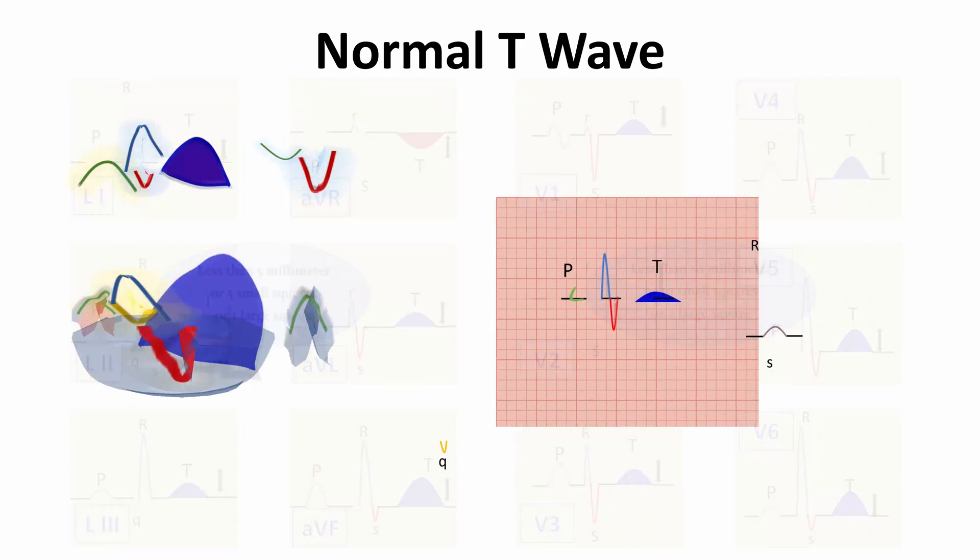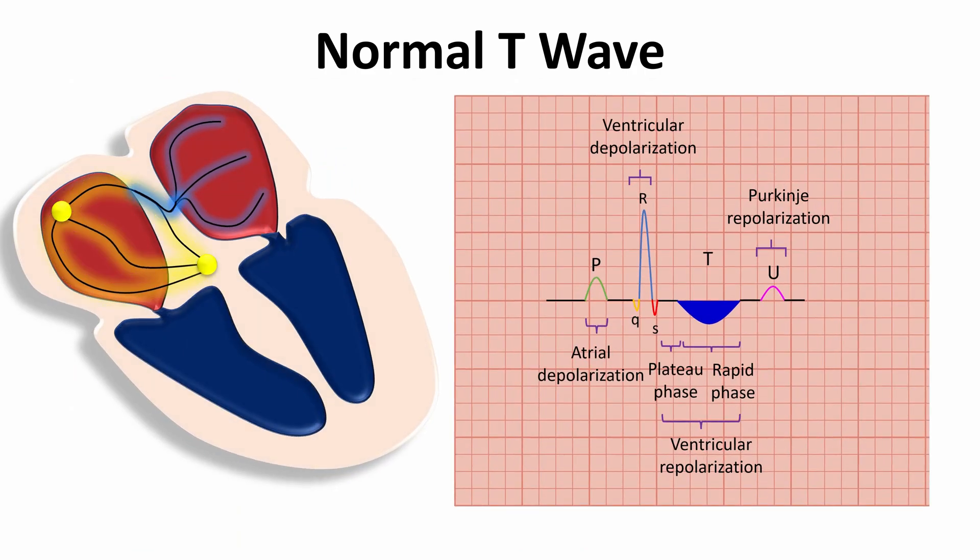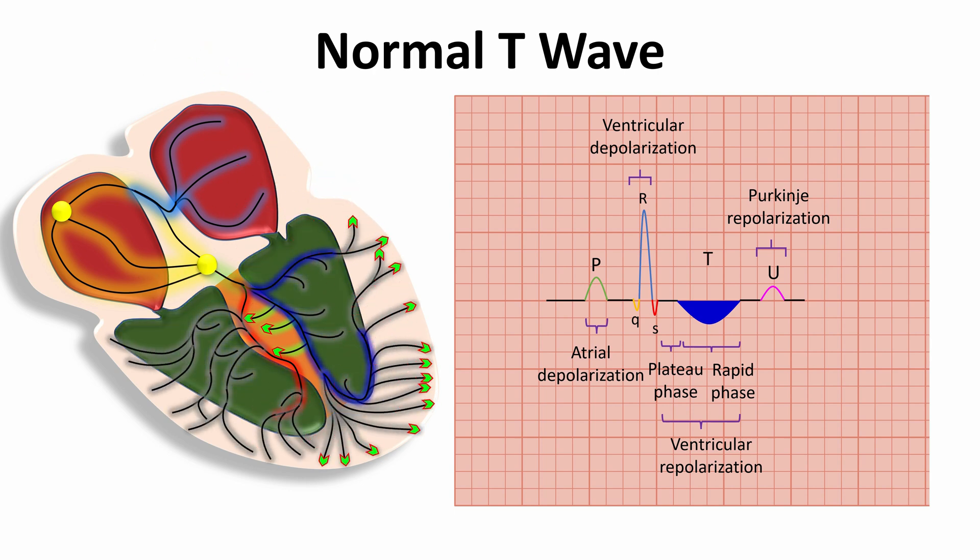Why T-wave is positive wave? So, to understand this, we have to understand how ventricular cells get depolarized and repolarized. Let's review the ventricular depolarization that will start with the septal depolarization, which occur from left to right and upward. Usually, this will be represented by small Q-wave. After that,